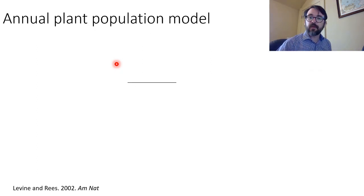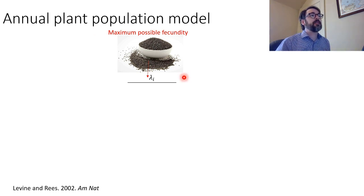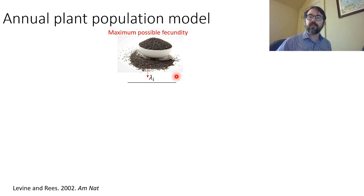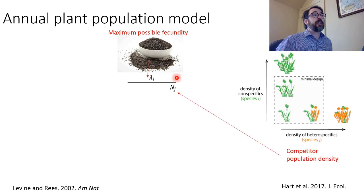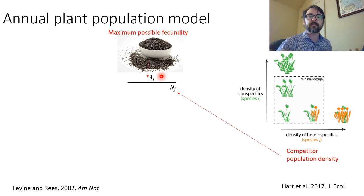I want to show you an example of what these continuous games look like using an annual plant game that's one of the earlier games that was developed. Imagine you have an annual plant — they only live for one year — and we can imagine they have some maximum possible fecundity. This would be the geometric rate of population growth if they were the only thing in the world, like if none of their offspring ever died. Competitor density is going to reduce the actual realized fecundity: you start with one individual, they have lambda babies, and then those babies compete, and the next generation might have fewer realized fecundity.